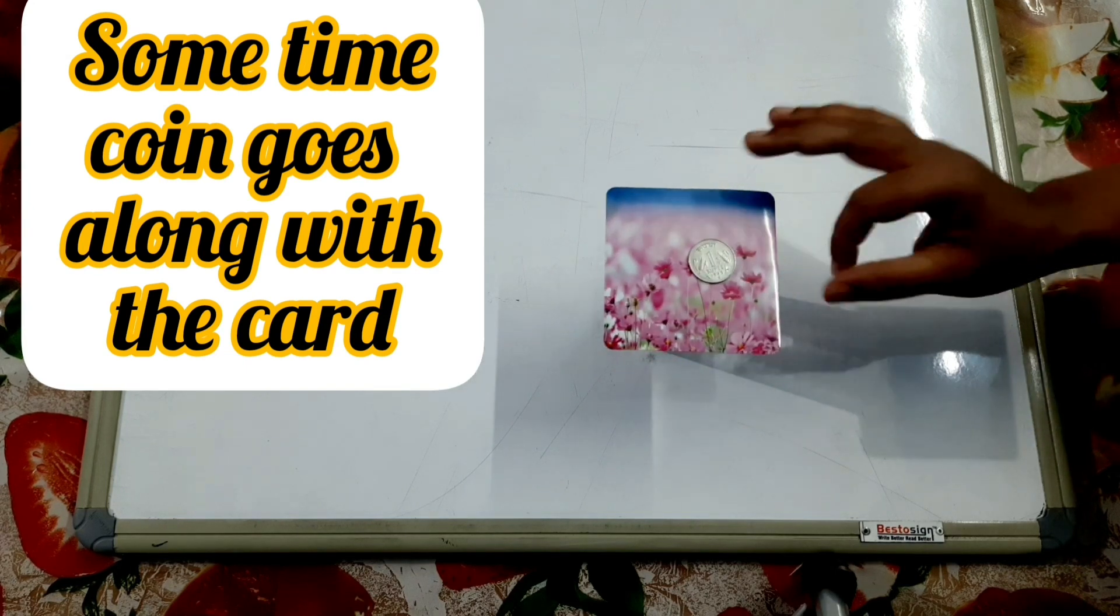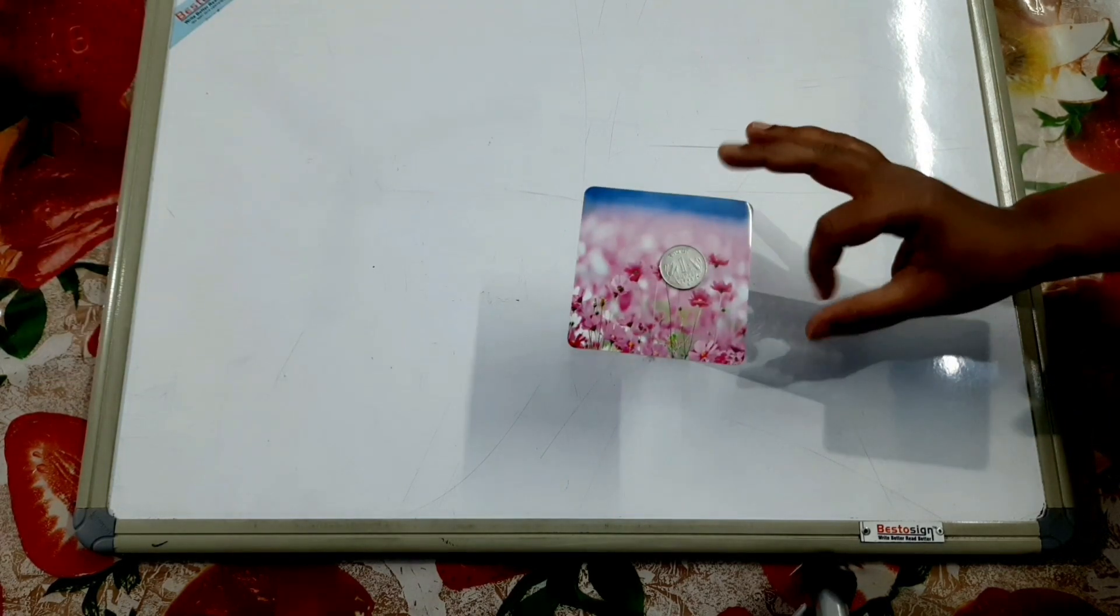So the explanation that the card moves in the forward direction because of inertia is not very much justified. If we see this with another angle, there is a relative movement between the card and the coin.